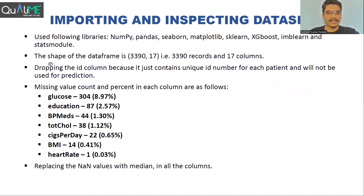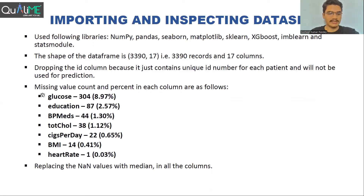These are the basic details about the dataset. There were no duplicate rows present, and the shape of the dataset was 3,390 rows and 17 features. There were some missing values in some columns — these are the names of those columns along with the count and percentage of missing values. We replaced all the null values with the median values of their particular columns.